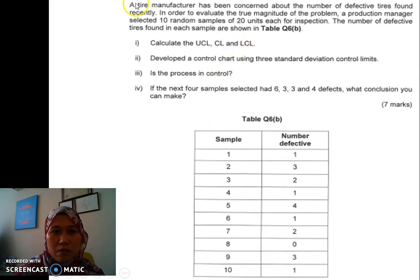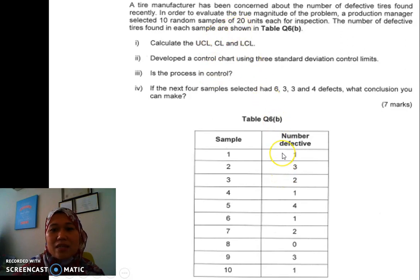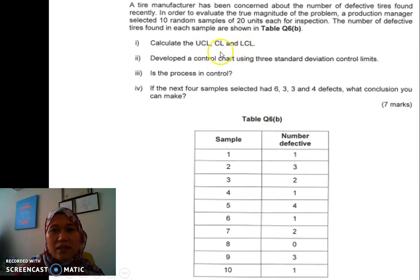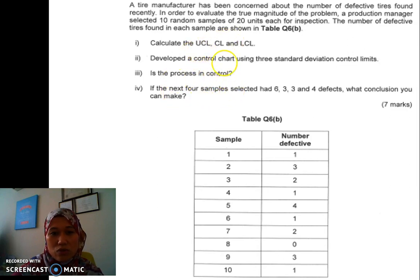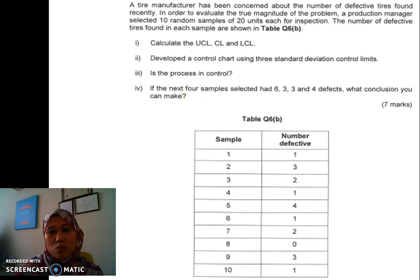From this question, it's about a tire manufacturer in which they have 10 samples and each sample they have 20. The sample size N is 20. We need to calculate the UCL, CL, and LCL.